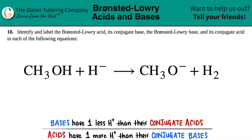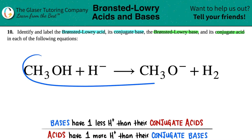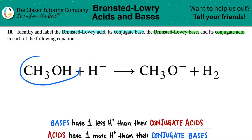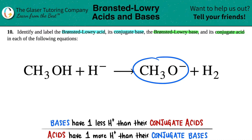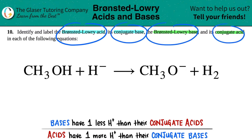Number 10. Identify and label the Bronsted-Lowry acid, its conjugate base, and then the Bronsted-Lowry base and its conjugate acid in each of the following equations. We have this one over here: CH3OH plus H minus yields CH3O minus plus H2. We just have to find the four different identifiers.